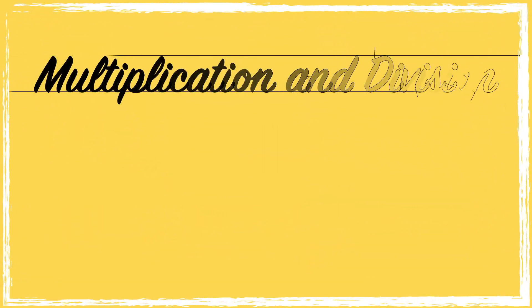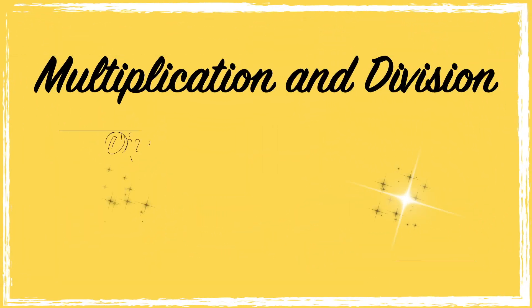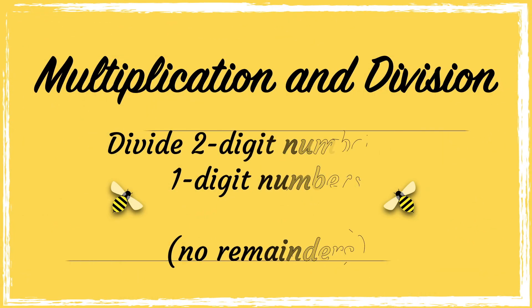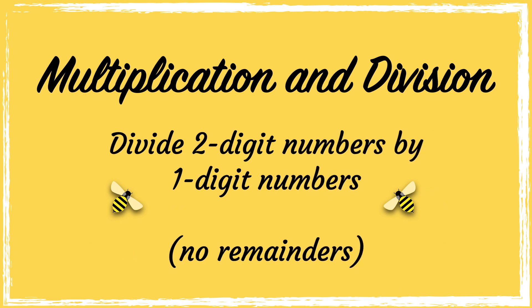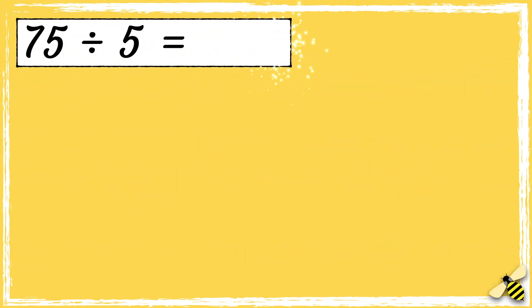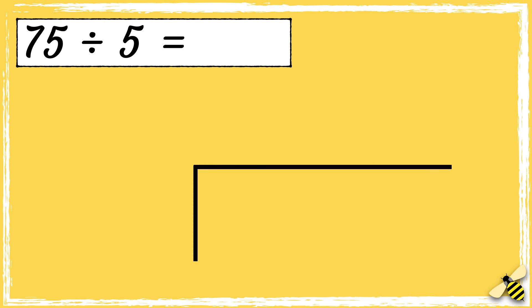In this video we're going to divide two-digit numbers by one-digit numbers. Here is a number sentence: 75 divided by 5. First we need to draw our bus stop — we put the number that we are dividing, the dividend, inside the bus stop.